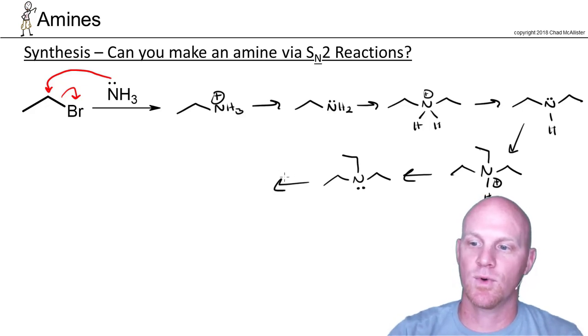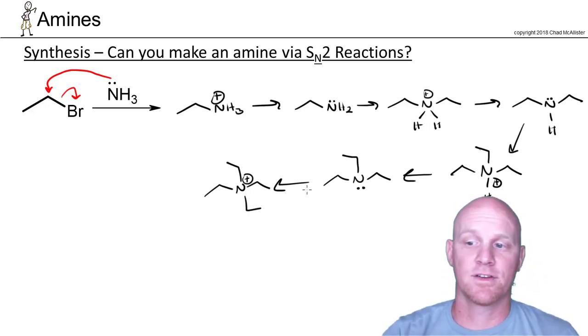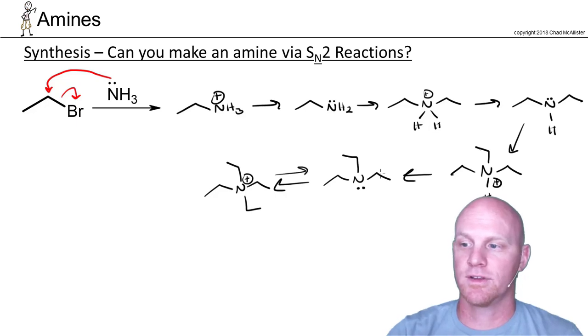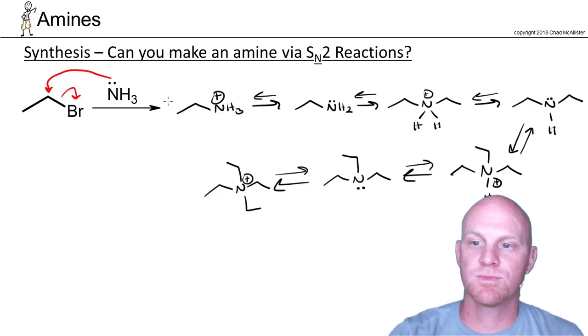But then it could react as well, and we end up with a quaternary ammonium salt, or at least a quaternary ammonium ion in this case. And there's the problem - it turns out we've got an equilibrium going all the way through, and so your solution's actually going to contain all of these species.